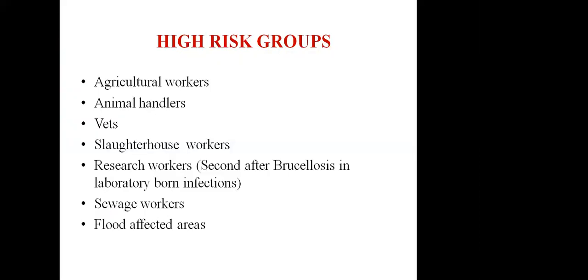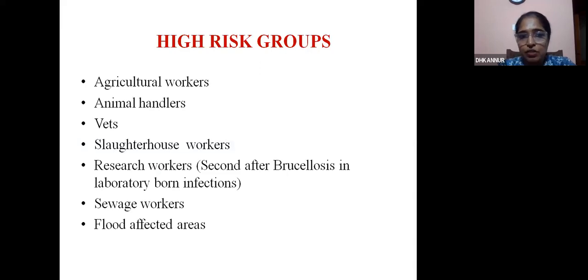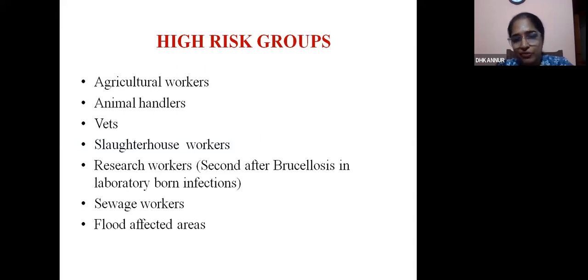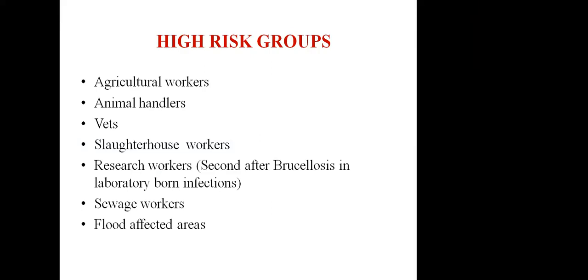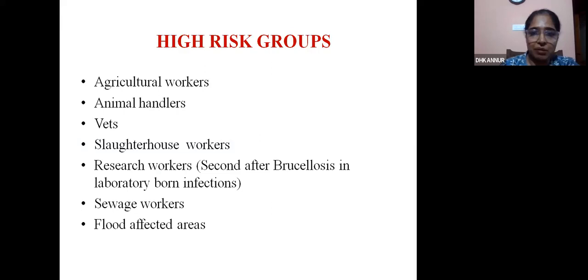Exposure to human beings occurs whenever they have any abrasion and are going into contaminated water, where the spirochete enters and causes various manifestations. High risk groups include agriculture workers, animal handlers, vets, slaughterhouse workers, research workers, sewage workers, and people in flood-affected areas.